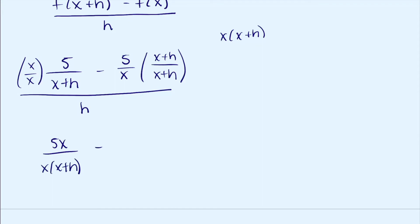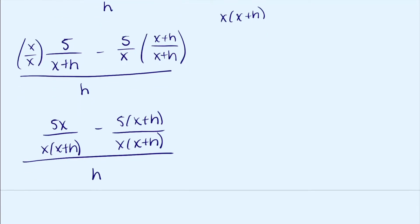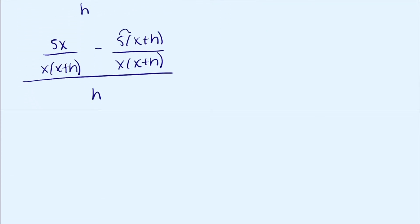Minus 5 times x plus h over x times x plus h, all over h. Then I'll distribute the 5 through.